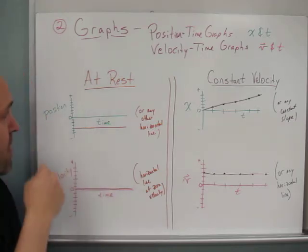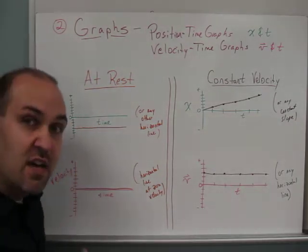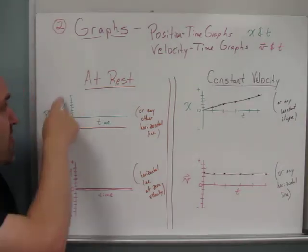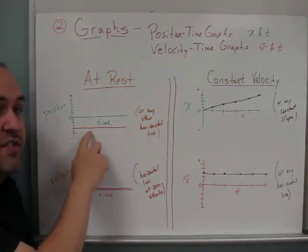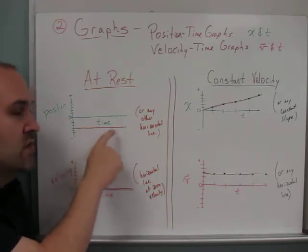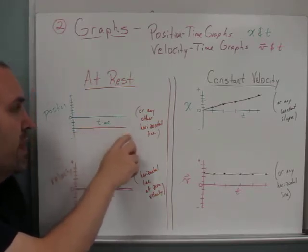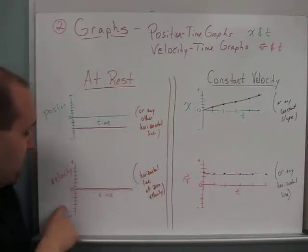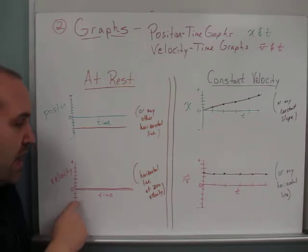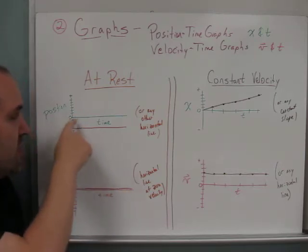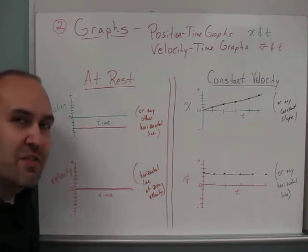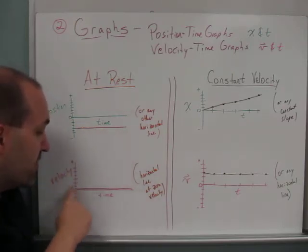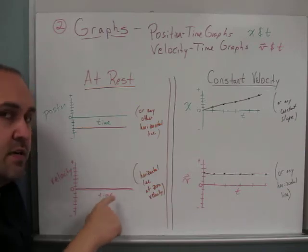If an object is at rest — sitting still, not moving — then on a position-time graph, the position doesn't change. So as time goes on, position is a constant value, which looks like a horizontal line. On a velocity-time graph, if it's at rest, we have no velocity, so that horizontal line has to be at zero. On the position-time graph, the horizontal line can be anywhere, since any horizontal line indicates constant position. But on the velocity-time graph, it must be at zero.